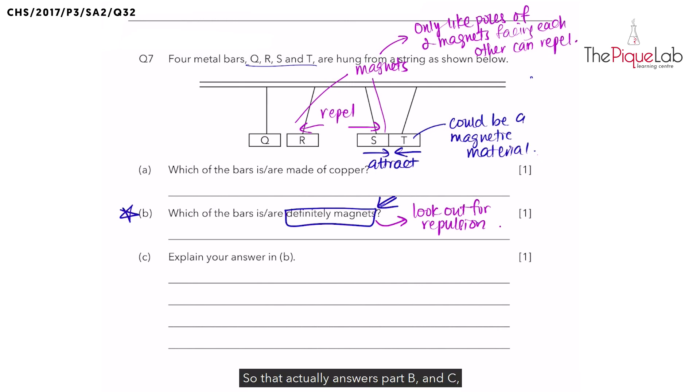So that actually answers part B and C. Which of the bars is or are definitely magnets? It is R and S. And how do we explain our answer? We say that only like poles of two magnets facing each other can repel and will move away from each other. As R and S move away from each other, R and S are magnets.